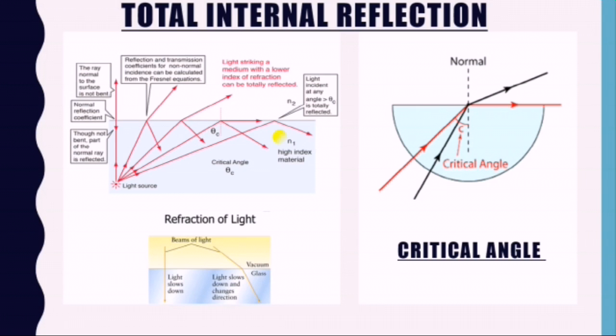Total internal reflection has uses in prisms, optical fibers, etc. I have just here given a clear picture of the critical angle, which is the angle of incidence for which the angle of refraction is 90 degrees.